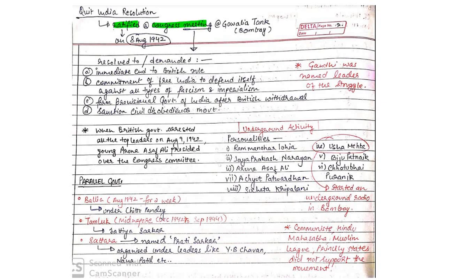The Quit India Resolution was ratified at the Congress Working Committee meeting at Gowalia Tank in Bombay on 8th August 1942. This meeting also resolved to demand an immediate end to British rule, declare commitment of free India to defend itself against all types of fascism and imperialism, form a provisional government of India after British withdrawal, and sanction a civil disobedience movement against British rule. Gandhiji was named as the leader of this struggle.